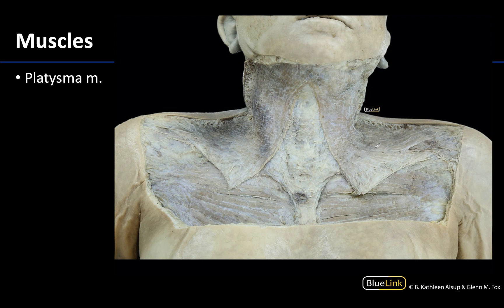We will start with the most superficial muscle of the anterior neck, and this is the platysma, which you can see here that I am outlining. You can see that it's a rather expansive muscle but it is a very thin muscle. This muscle is literally located within the subcutaneous tissue, like most other muscles of facial expression, but this particular muscle of facial expression is specifically located in the anterior lateral neck.